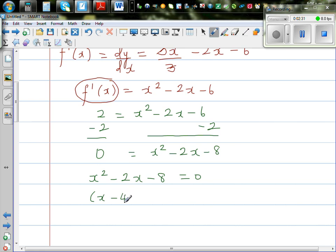So you can factorize this, so this is x minus 4, times x plus 2, is equal to 0. So I can say x is equal to 4, or x is equal to negative 2.